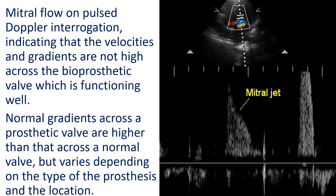Mitral flow on pulsed Doppler interrogation indicates that the velocities and gradients are not high across the bioprosthetic valve, which is functioning well. Normal gradients across a prosthetic valve are higher than those across a normal valve, but vary depending on the type of the prosthesis and the location.